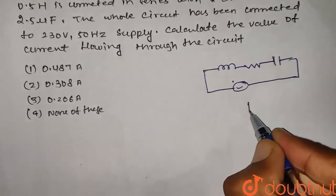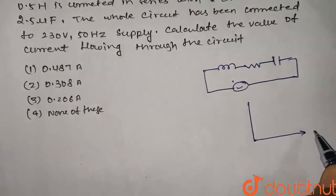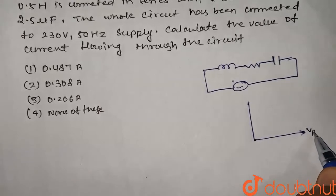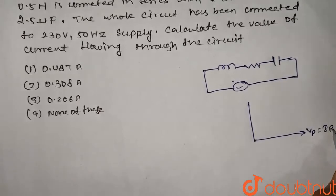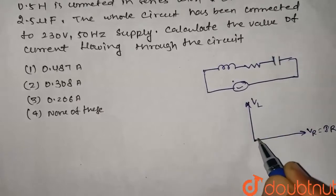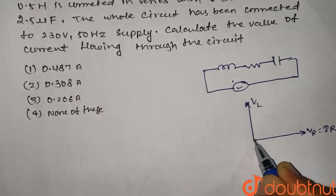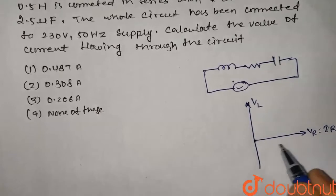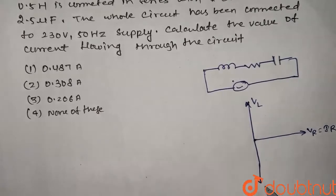Here we have the reference point. VR is equal to IR. This is the VL, 90 degree leading from the potential across VR. This is the VC.